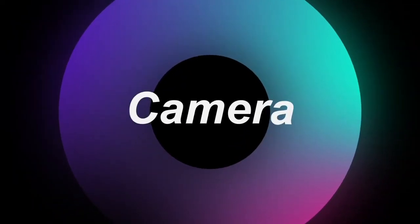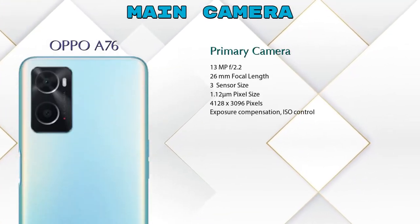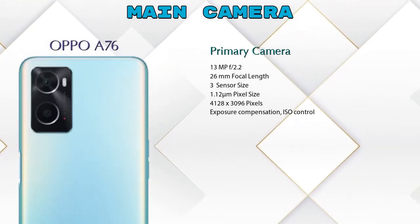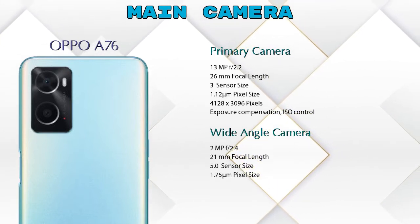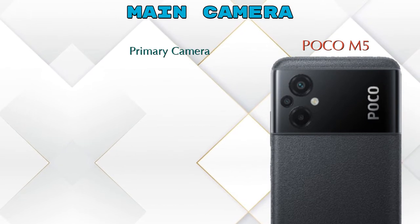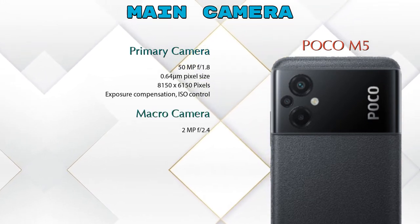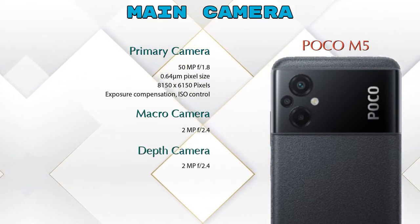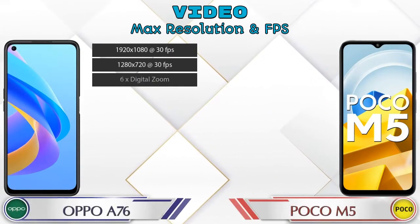Let's see the details about our favorite feature — camera. First, talking about the rear camera: A76 has two cameras — a primary camera and a wide-angle camera. Poco M5 has three cameras — a primary camera, a macro camera, and a depth camera. If we talk about video features, both phones have eight different types of features available.